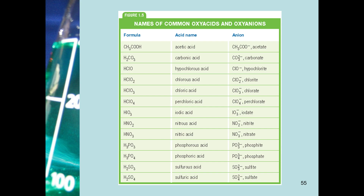For the anions whose names end in -ite, instead of -ous we replace the -ite with -ous to name the acid. So hypochlorite becomes hypochlorous acid; chlorite becomes chlorous acid; nitrite becomes nitrous acid; and sulfite becomes sulfurous acid — not sulfuric, but sulfurous acid.